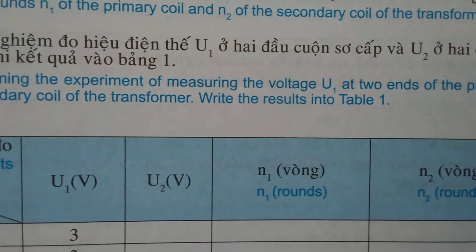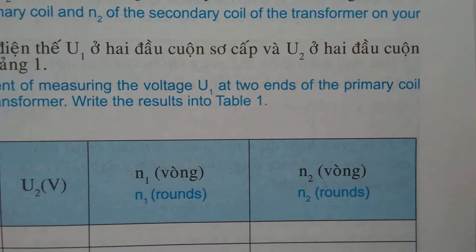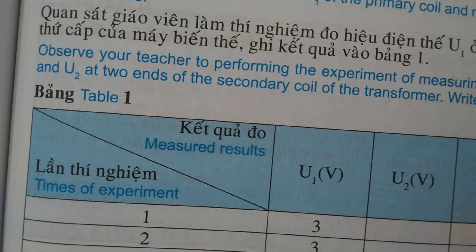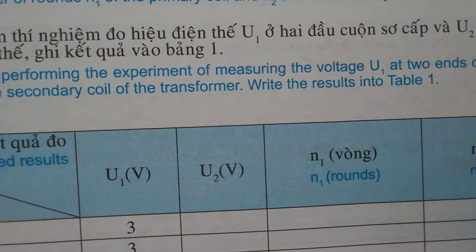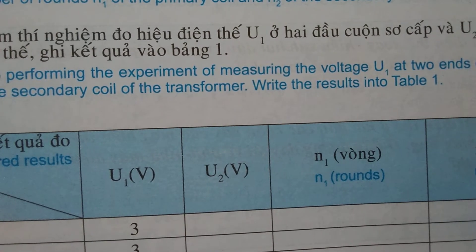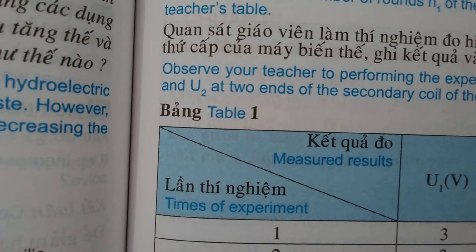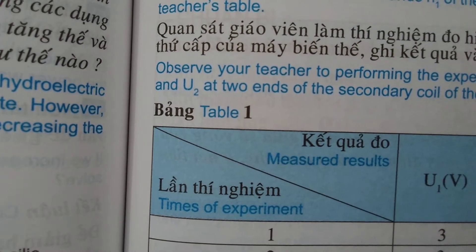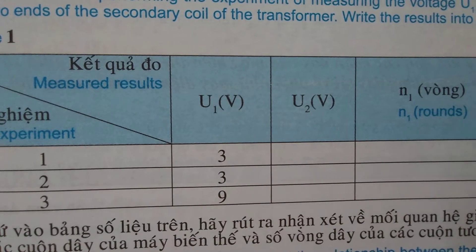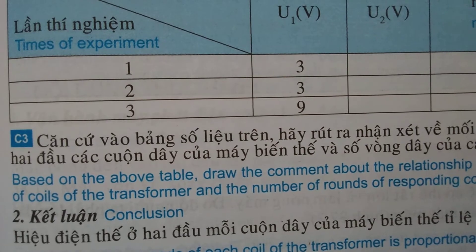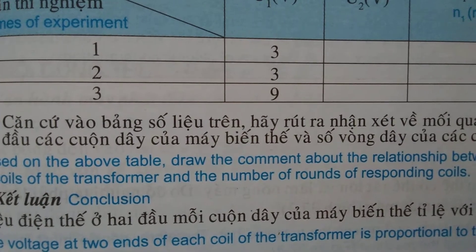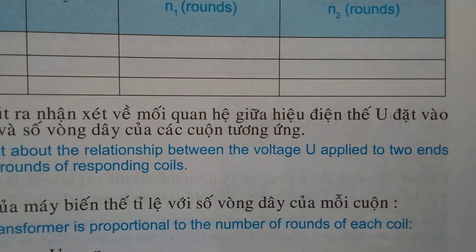Perform an experiment measuring the voltage U1 at two ends of the primary coil and U2 at two ends of the secondary coil of the transformer. Record the results in Table 1. Measure and record results for each experiment, noting the voltage values.